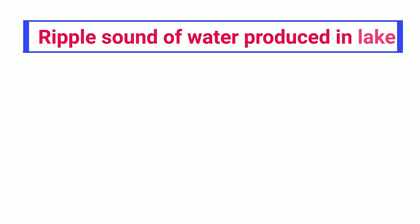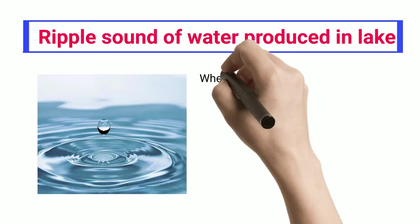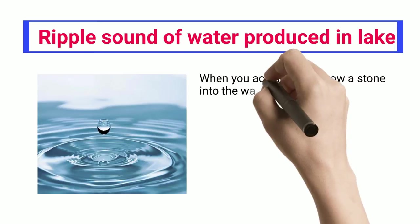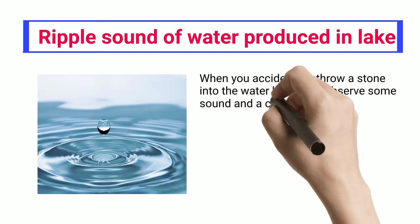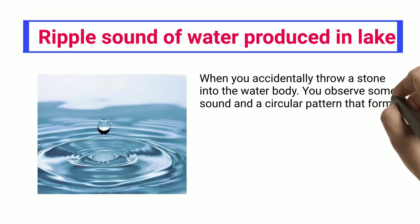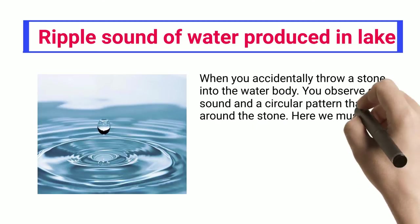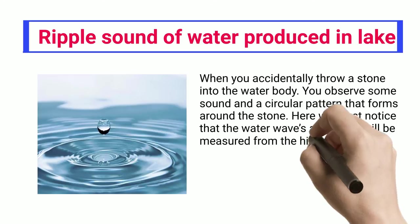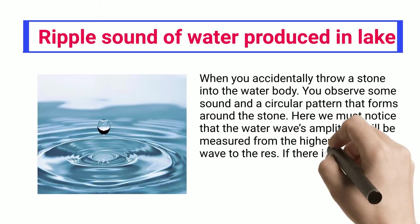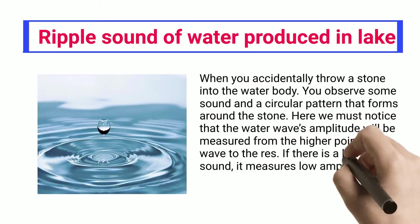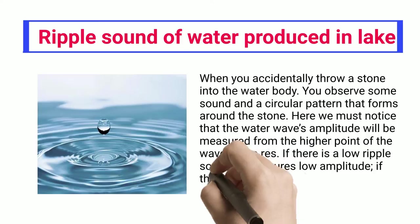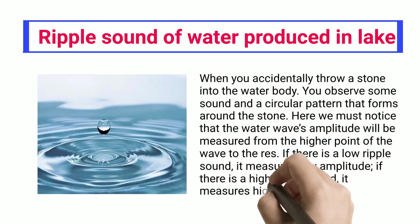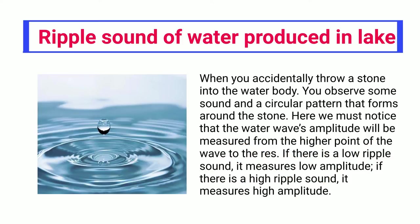Ripple Sound of Water Produced in Lake: When you accidentally throw a stone into a water body, you observe some sound in a circular pattern that forms around the stone. Here we must notice that the water wave's amplitude will be measured from the higher point of the wave to the rest. If there is a low ripple sound, it measures low amplitude; if there is a high ripple sound, it measures high amplitude.